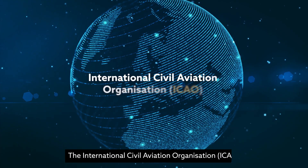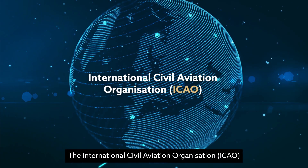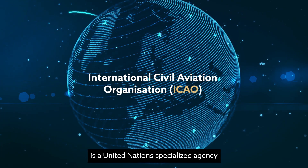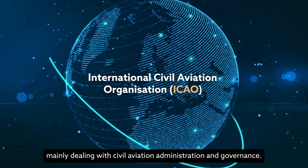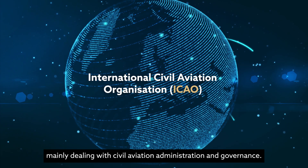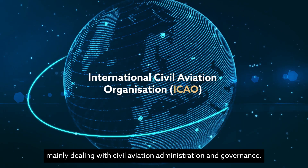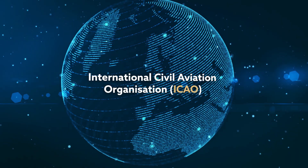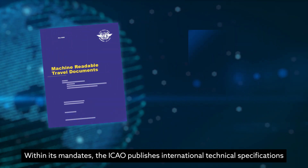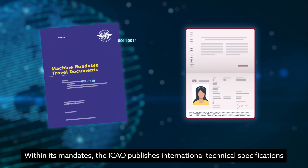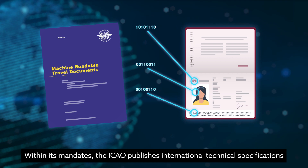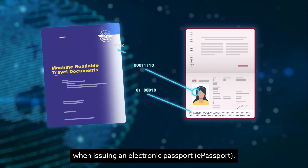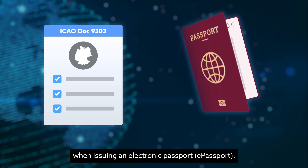The International Civil Aviation Organization, ICAO, is a United Nations specialized agency mainly dealing with civil aviation administration and governance. Within its mandates, the ICAO publishes international technical specifications that need to be followed by a country when issuing an electronic passport.